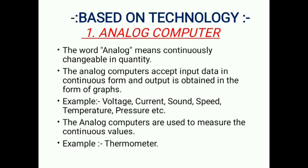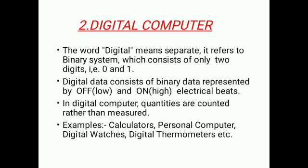The second one is digital computer. The word digital means separate. It refers to the binary system which consists of only two digits, that is 0 and 1. Digital data consists of binary data represented by off and on electrical bits — off means low and on means high. In digital computers, quantities are counted rather than measured. Examples of digital computers are calculators, PC means personal computers, digital watches, and digital thermometers.